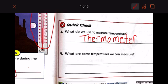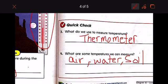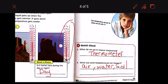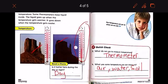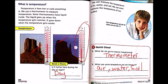What are some temperatures we can measure? We can measure air, water, and soil. Yes, we can measure the soil. If we want to find the temperature of the soil, we can measure it.